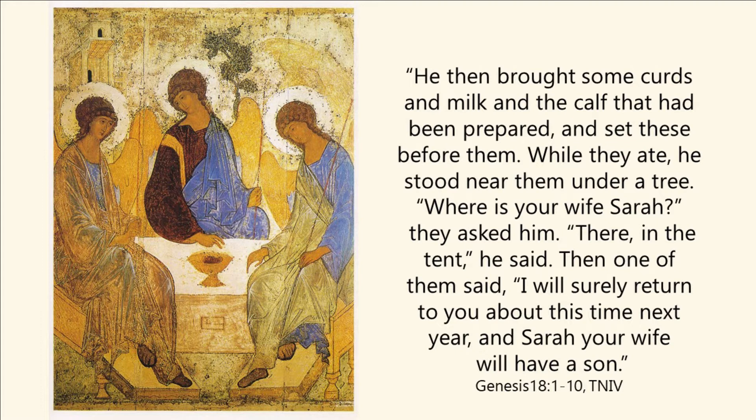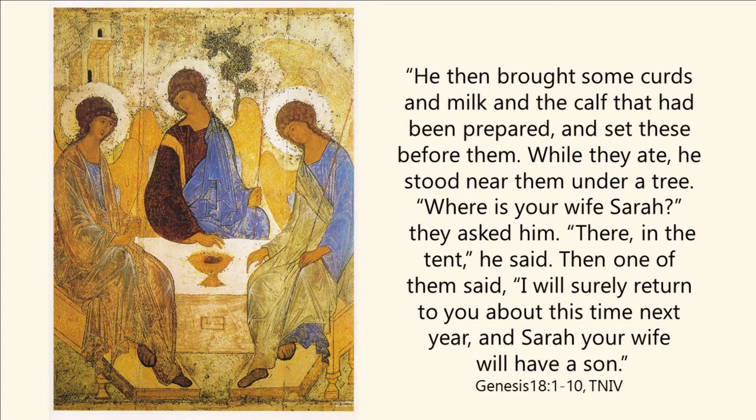'Where is your wife Sarah?' they asked him. 'There in the tent,' he said. Then one of them said, 'I will surely return to you about this time next year, and Sarah your wife will have a son.' So God, the Lord, came to Abraham in the form of three men. Abraham extended hospitality to them — to God through them. And after their meal, one of them prophesied what God had promised: that Abraham would have a son.